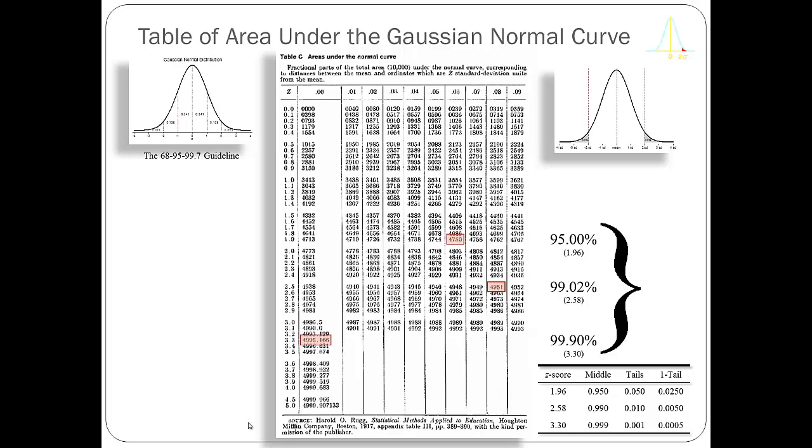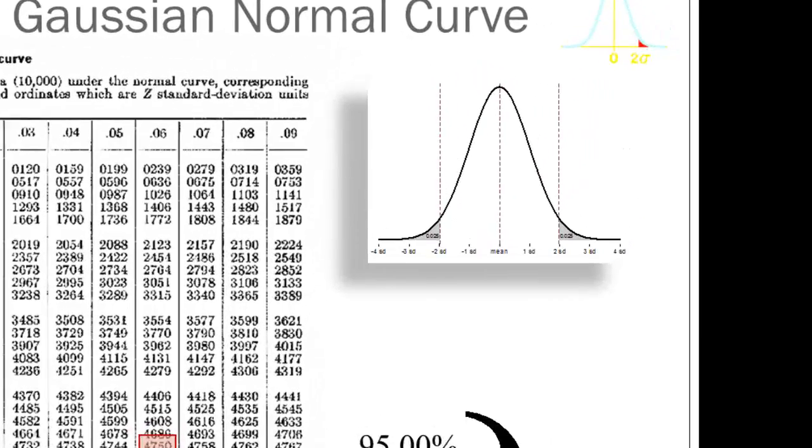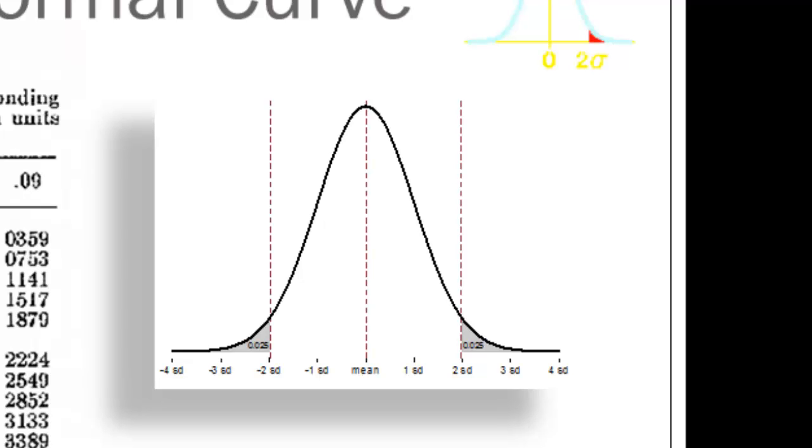These numbers - the 1.96, the 2.58, and the 3.3 - will be used very often in our work in statistics. They'll define regions or areas of things that we think are likely to be due to chance (the 0.95, the 0.99, the 0.999, the area in the middle), and things that we think are statistically rare or unlikely to occur by chance, and that's the area in the tails of the distribution.